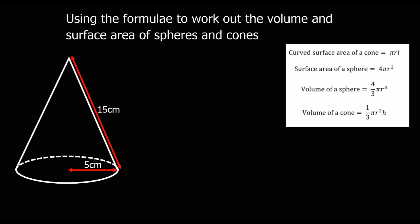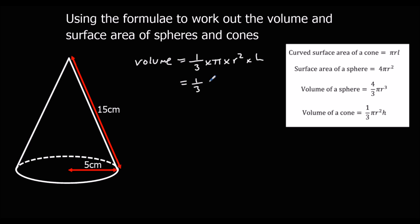Now we've got a cone. Let's do the volume first — that's the easier one in this case. The volume is 1 third times pi times r squared times h, which is 1 third pi times 5 squared times h. But we don't actually know h in this case, so I'll leave times h there for now. We know l, the diagonal, but we don't know the vertical height.